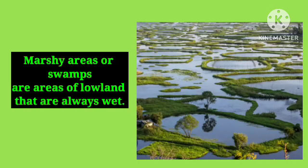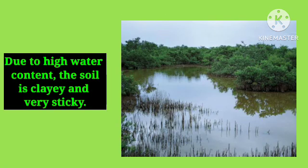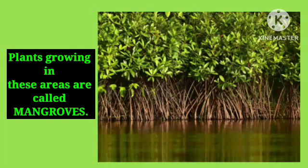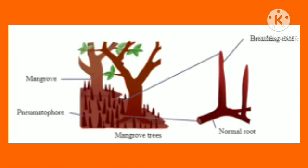Marshy areas or swamps are areas of low land that are always wet. Due to high water content, the soil is clay and very sticky. Plants growing in these areas are called mangroves. Roots of mangroves do not get sufficient air; therefore, these plants have specialised roots called aerial or breathing roots that grow above the soil and help them to breathe.